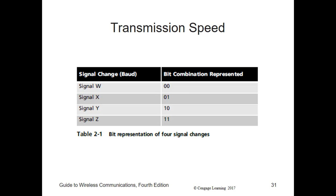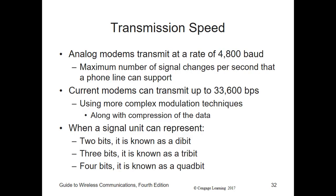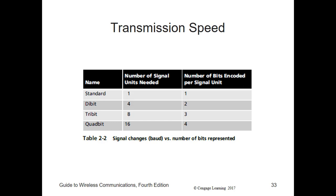A signal change that represents two bits is called a di-bit. When a signal change represents three bits, it's called a tri-bit. If 16 different signal changes are used representing four bits per signal, it would be called a quad-bit.